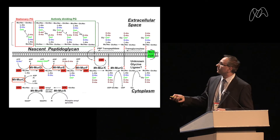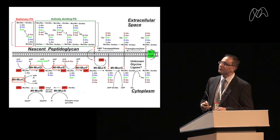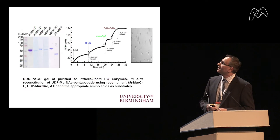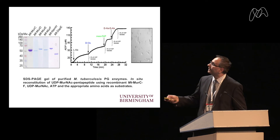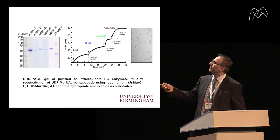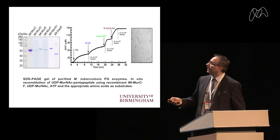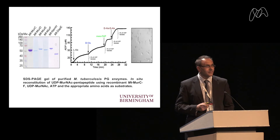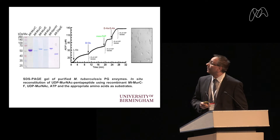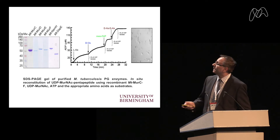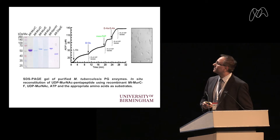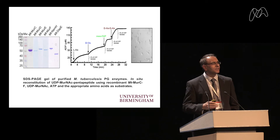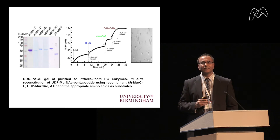We sought to understand some of the earlier stages in assembly of the pentapeptide via the Mur enzymes. This required us to purify each enzyme — we expressed MurC, MurD, MurE, and MurF in E. coli. In collaboration with the University of Warwick and Professor Chris Dowson and Adrian Lloyd, we developed a phosphate release assay where we could sequentially add each amino acid and look at ADP release. This worked really nicely as a coupled assay to study the initial Mur ligase pathway.